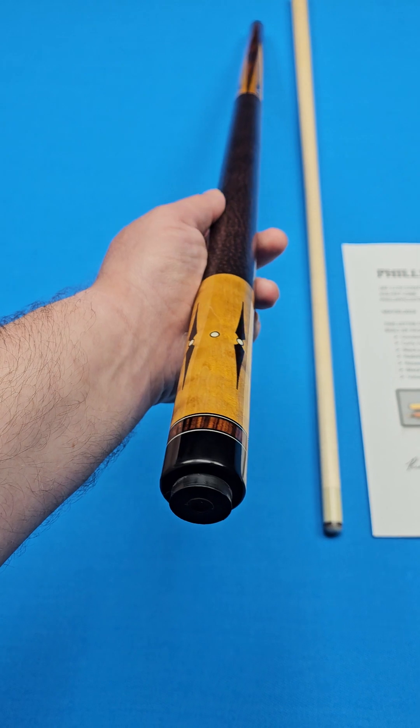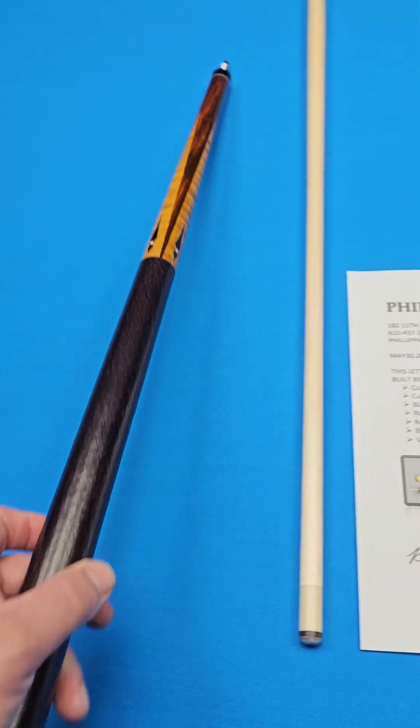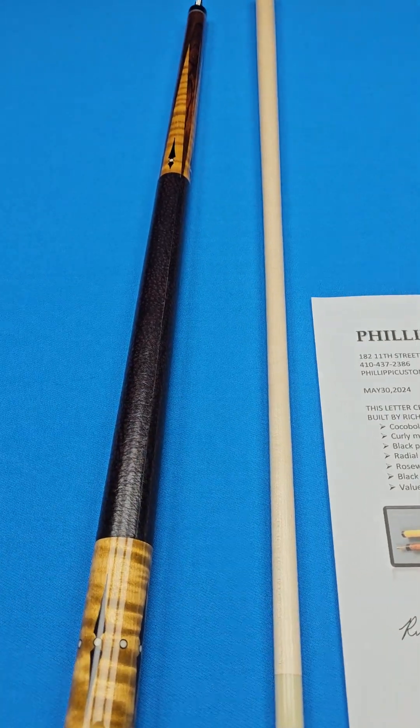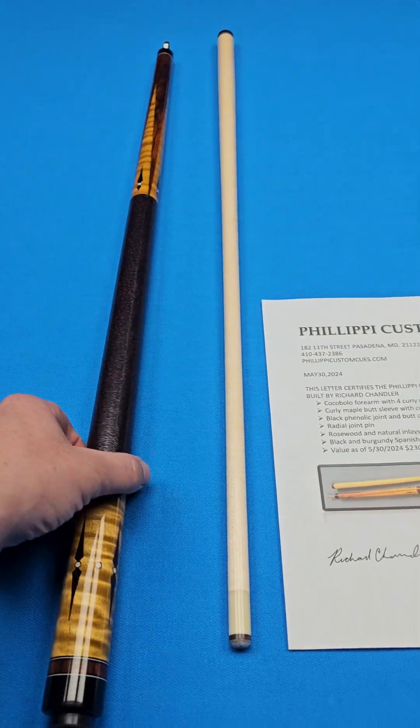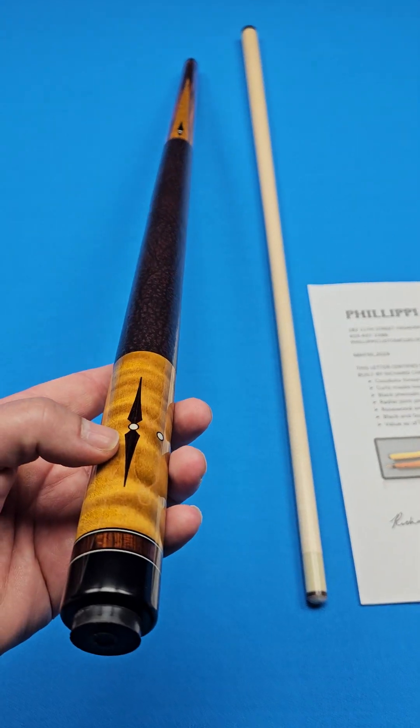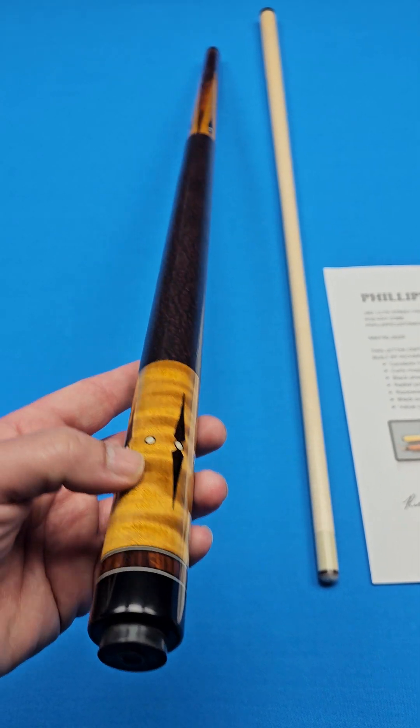And if you're wondering, is it super yellow in person? No, it's not. It's got a great color to it. You have also a black phenolic joint and cap, and then you have rosewood inlays throughout the butt sleeve and the points along with natural inlays. Those circles or the spears there, those are all natural.